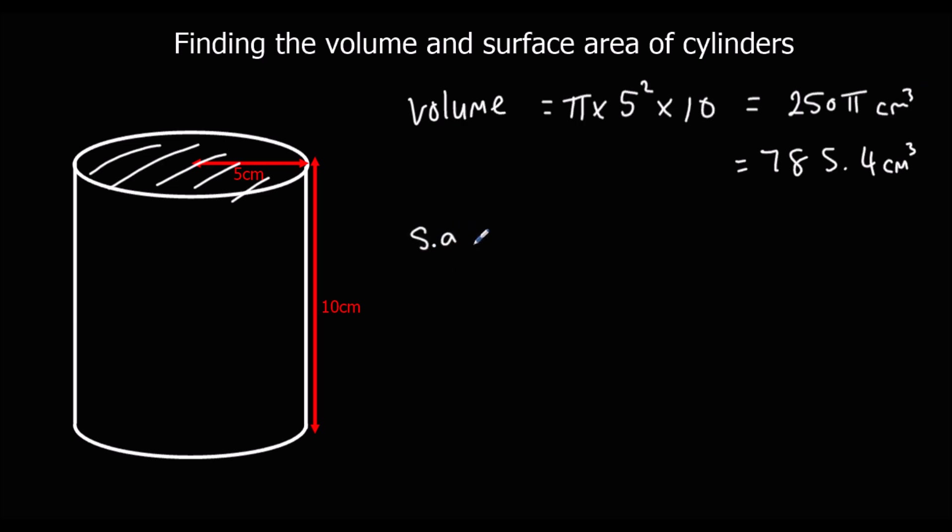Surface area. We've got the two circles which are pi times r squared, pi times 5 squared in this case, so 25 pi. We've got two of those, 25 pi. And we've got the curved bit which is pi times diameter, pi times 10, times the height, times 10. So that would be 100 pi. So the total surface area is 150 pi, or that would be 471.2, and it's centimeters squared because this time it's area, surface area.